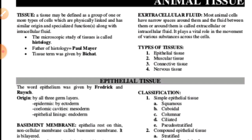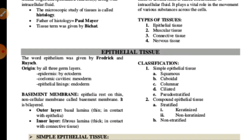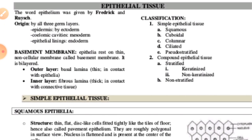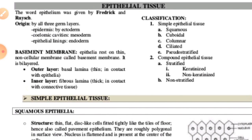Animal tissues can be classified into four categories: epithelial tissue, muscular tissue, connective tissue, and nervous tissue. Epithelial tissue — the word 'epi' means 'upon' and 'theli' refers to covering. These tissues cover both external and internal surfaces of the animal body. The epithelial tissue has a free surface which faces either a body fluid or the outside environment, providing covering or lining for parts of the body.